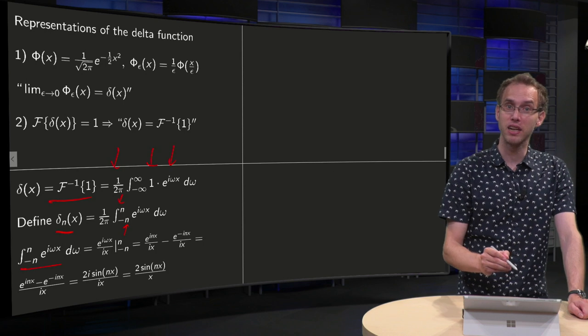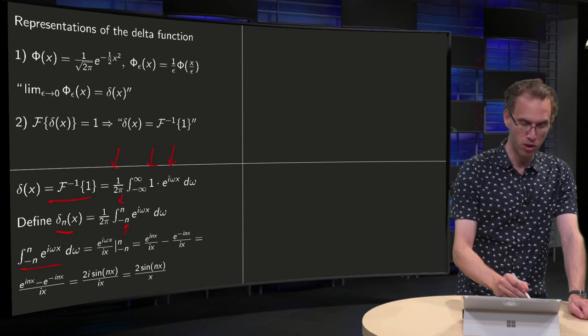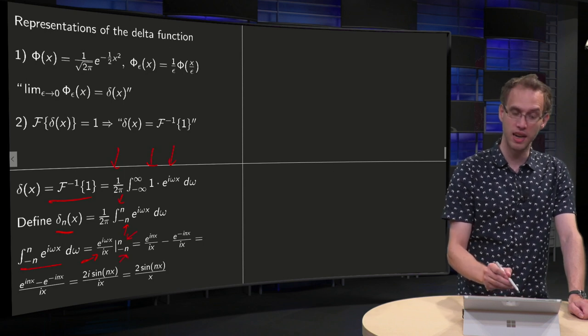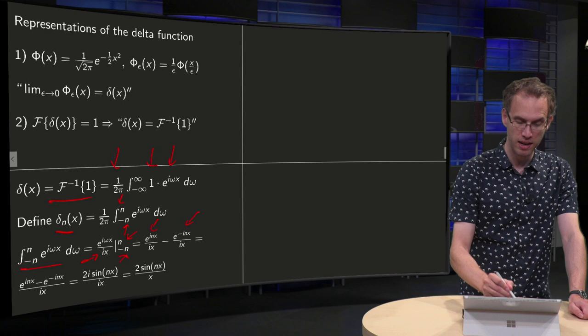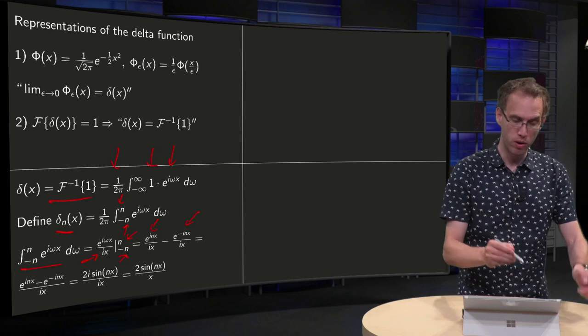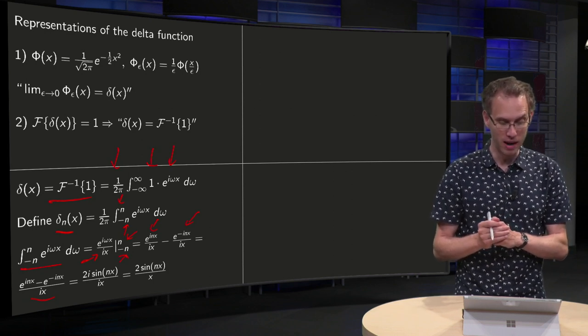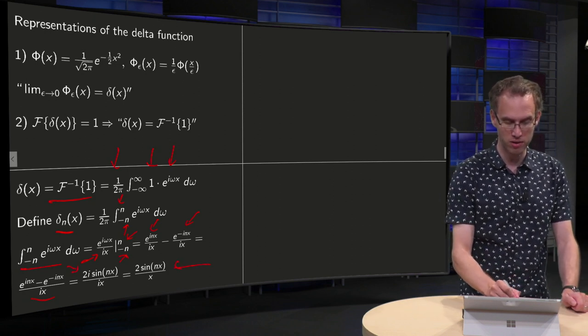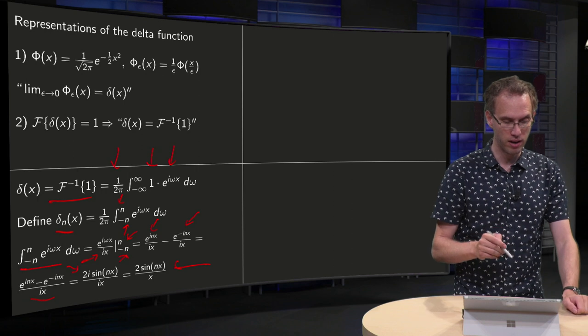So we have to integrate e to the power iωx with respect to ω from minus n to n, so integrate with respect to ω, you get 1 over ix over there, and plug in ω equals n and minus n, so we have e to the power iωx over ix minus lower boundary e to the power minus iωx over ix. Turn this into one fraction, so you get ix in the denominator e to the power iωx minus e to the power minus iωx in the numerator, which is equal to 2i times sine of nωx. Factors of i cancel out, and you get 2 times sine nx divided by x, as your δ_n(x).